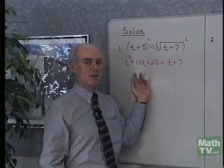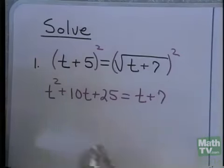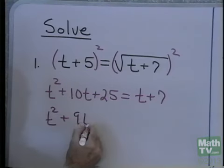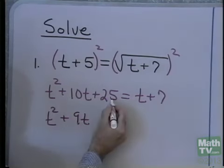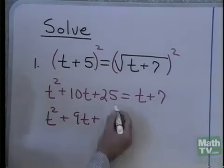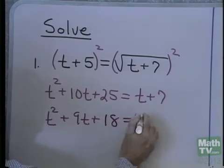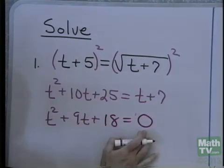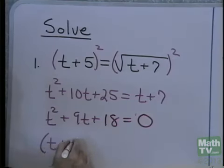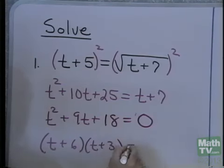So you can see I have a quadratic equation right here. I want to put it in standard form, factor it, and then see what I get for solutions. I have t squared — I'll subtract t from both sides — plus 9t. Subtract 7 from both sides, and I end up with 18. That is, 25 plus negative 7 is 18, is equal to 0. So I put my equation in standard form, with 0 on one side and decreasing powers of the variable on the other side.